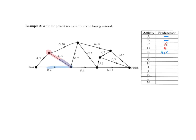For F, what came into F? Just B and C. For G, we've got D and E. For H, we've got D and E. And for I, I had H.